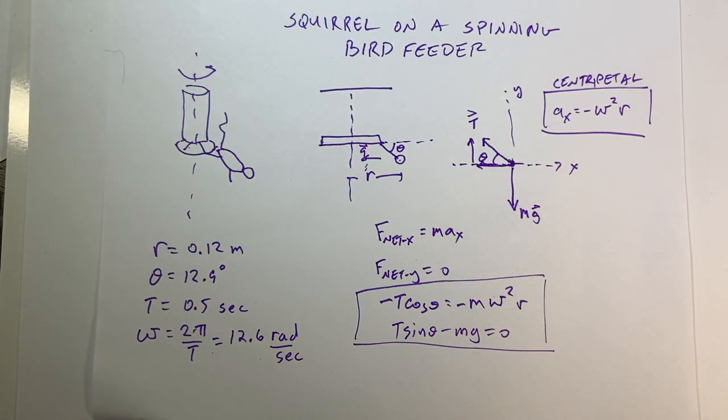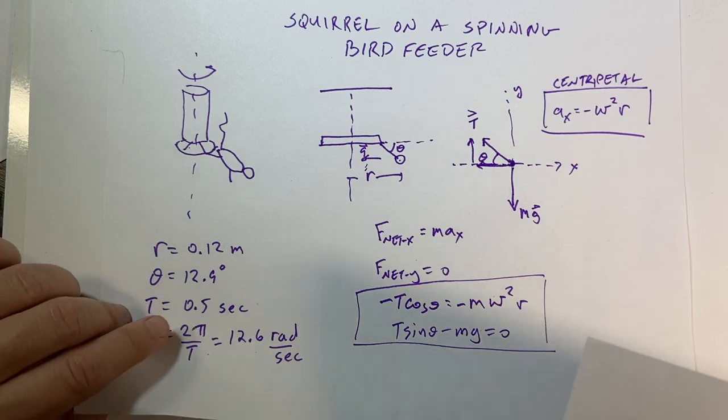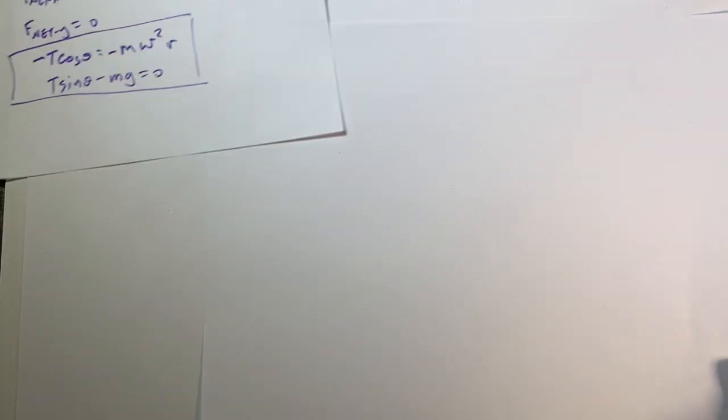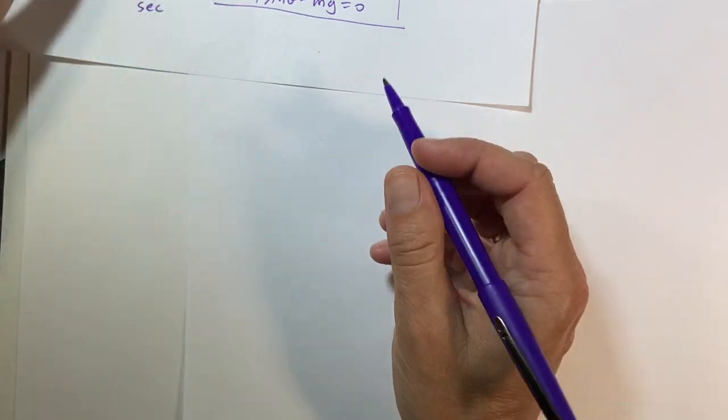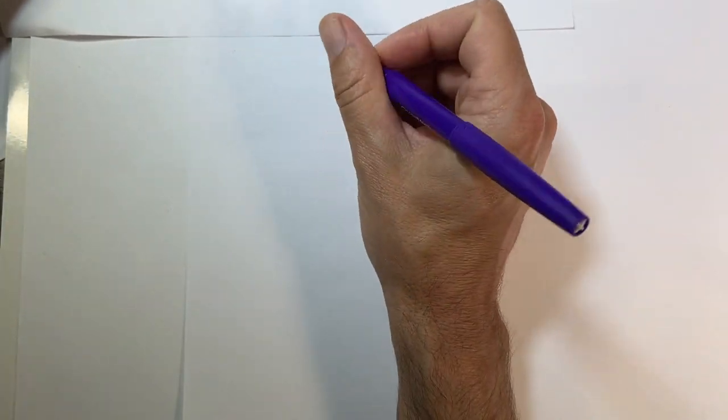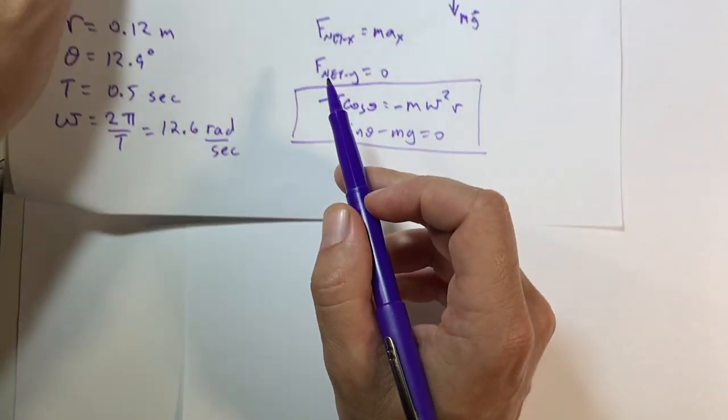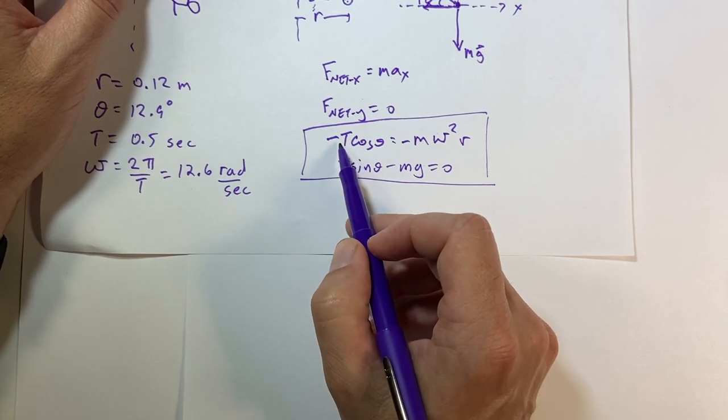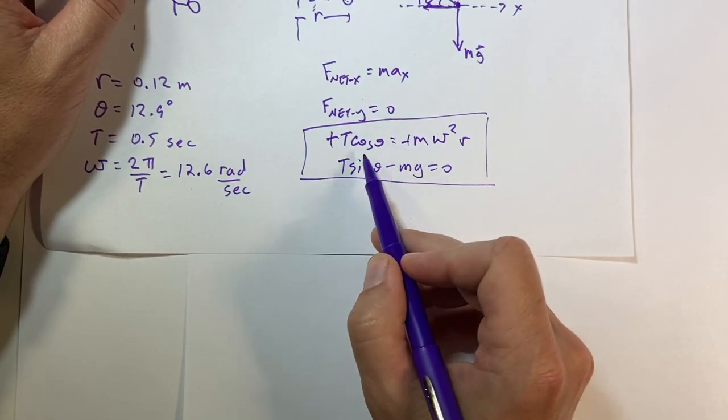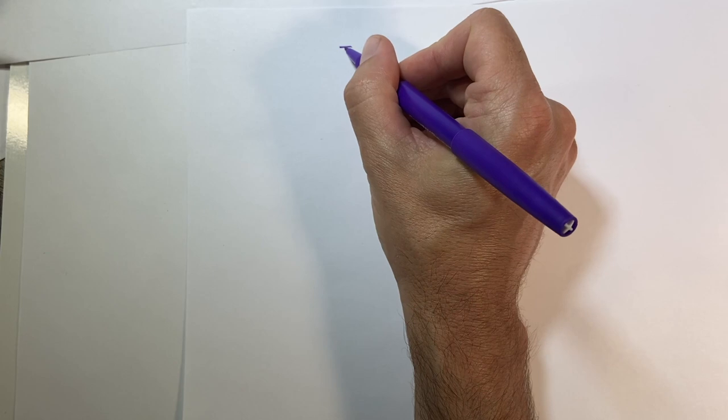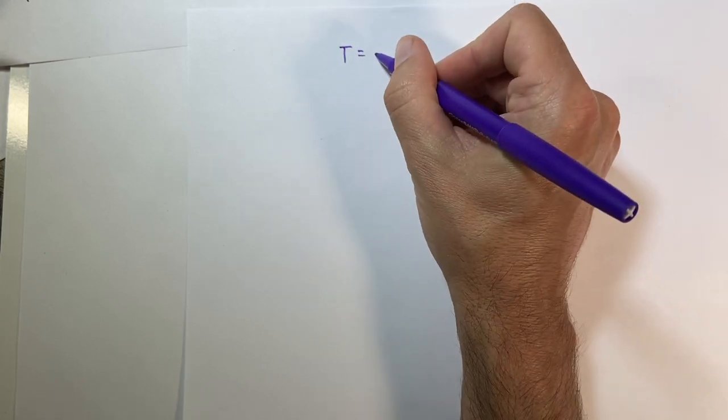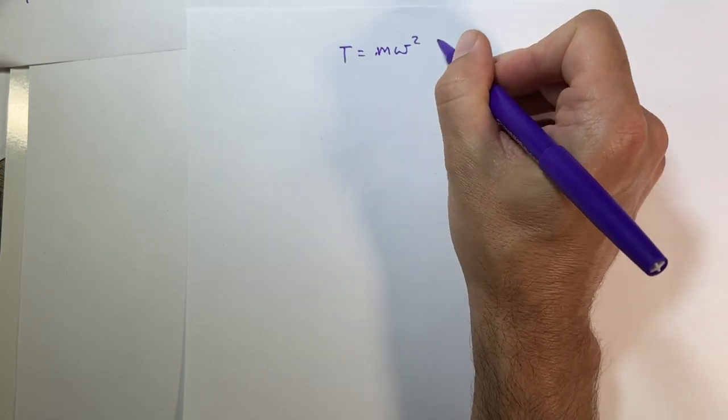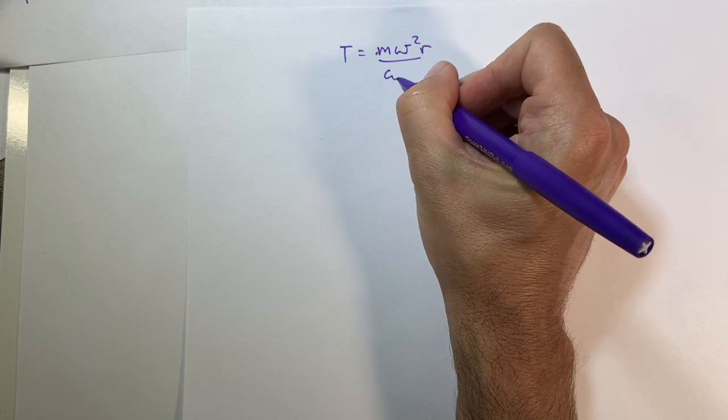So, let's take this one and solve this for the tension. I really don't know what I'm doing here. So, I'm just kind of playing around. And that's okay. We don't always have to know exactly what we're doing. Let me just rewrite these equations real quickly. So, I get, I'm going to, let's go ahead and solve this one for T. So, I'll multiply both sides by negative 1 and divide by cosine theta. So, I get T equals m omega squared r over cosine theta.